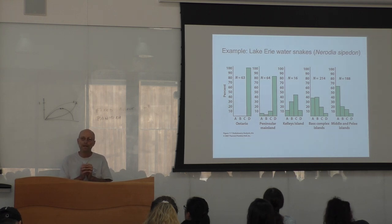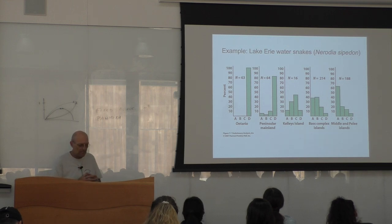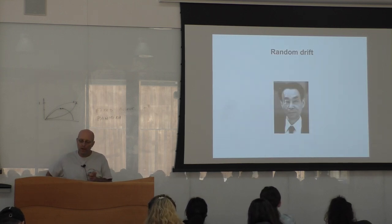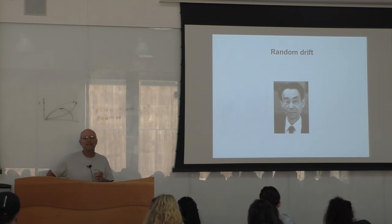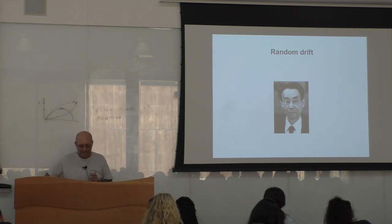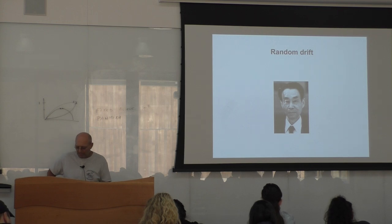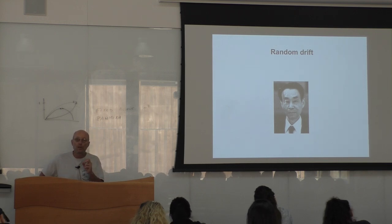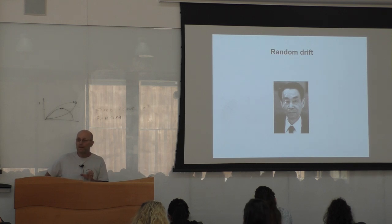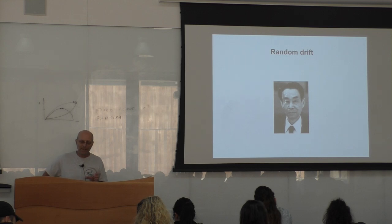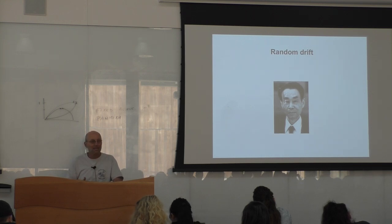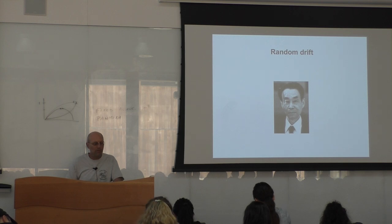Now we talk about population size. One of the requirements for Hardy-Weinberg equilibrium is that the population be infinite — never achieved in practice, but the population needs to be very large. When populations are small, very strange mathematical effects occur. This is called random genetic drift, named by Motoo Kimura. Darwin said evolution is survival of the fittest; Kimura said evolution is survival of the luckiest.